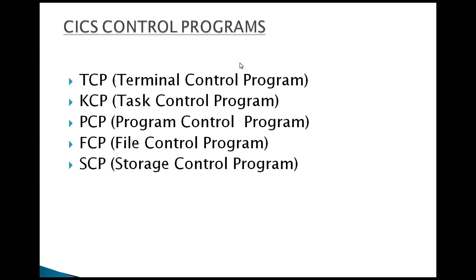Before starting, just like in JCL you may have seen various IBM utilities that are built in and provided by IBM — meaning there's no need to write a program to take a specific action. For example, in JCL, to copy a program from one file to another, you could write a COBOL program, but the fastest way is to use an IBM-supplied utility. The same way, CICS has supplied its own control programs and control tables used in the background for CICS operations.